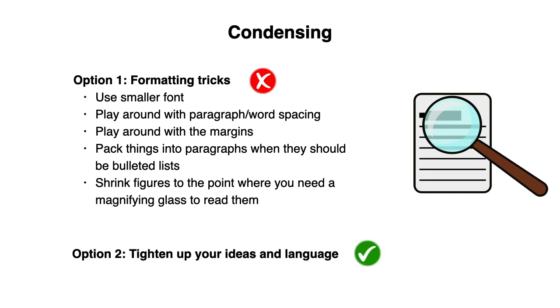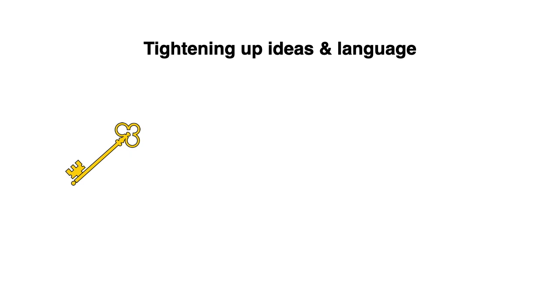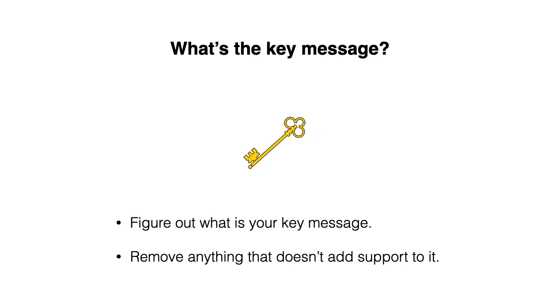You should tighten up your ideas and your language. First, you should identify what the key message is at each level of your document. Then you should clean up your story arcs. And finally, you should use the delete key. Your document should only contain content that supports your key message. So first figure out what your key message is, and then remove anything that doesn't add support to it.